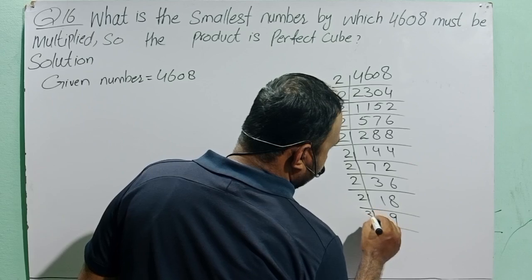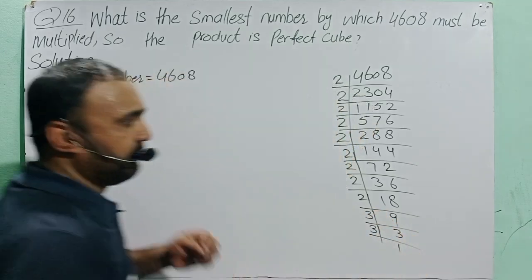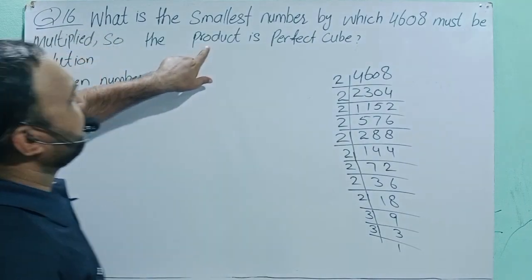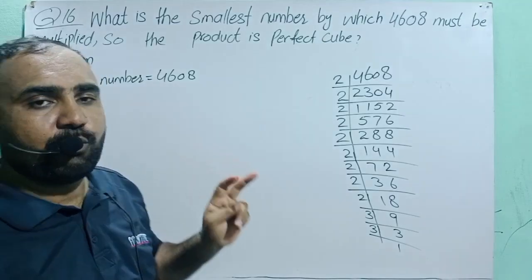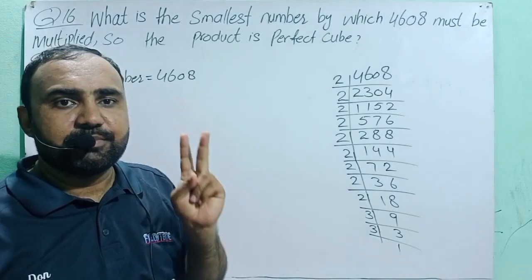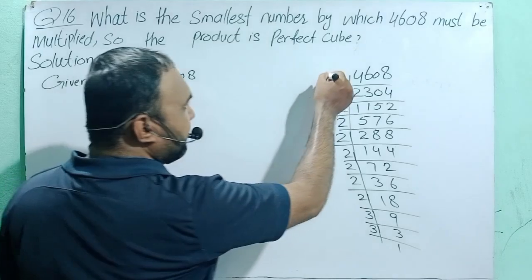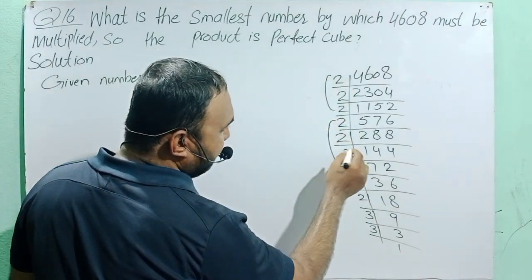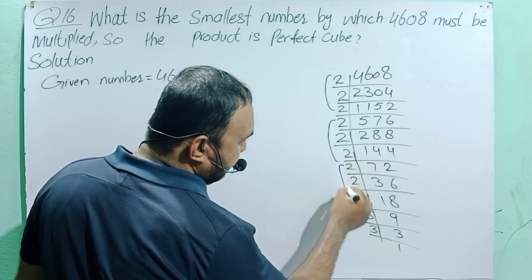Then divide 9 by 3 and again by 3, giving 3 ones are 3. Now we see that the product is a perfect cube. Each group means 3 digits — this is the first pair (3 digits), second pair (3 digits), and similarly this is the third pair.